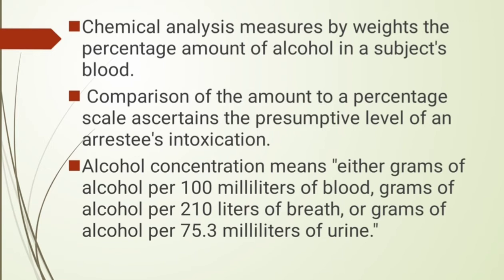The results of the suspect's blood alcohol test will be compared to a reference level. Alcohol concentration means grams of alcohol per 100 milliliters of blood. When there is 100 ml of blood, we measure the amount of alcohol present. For breath, approximately 10 liters of breath contains a measured gram of alcohol, and for urine, 75.3 ml of urine contains a measured gram of alcohol.